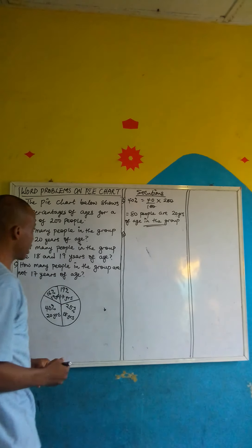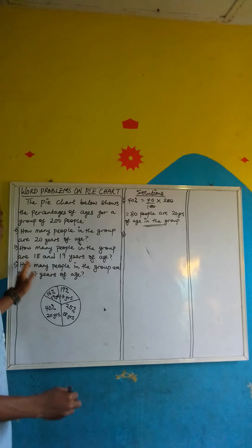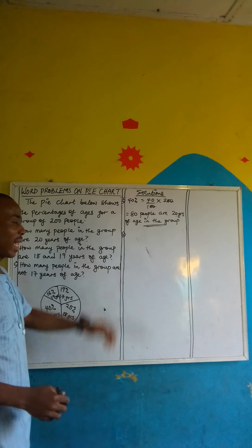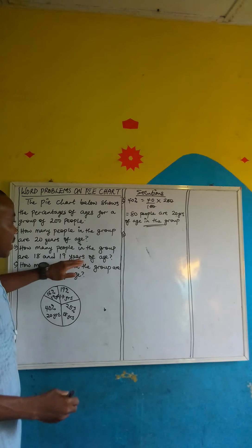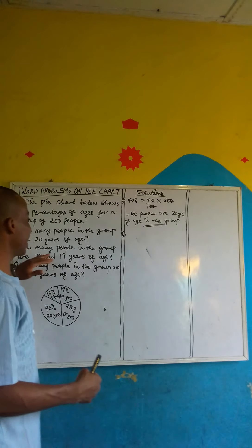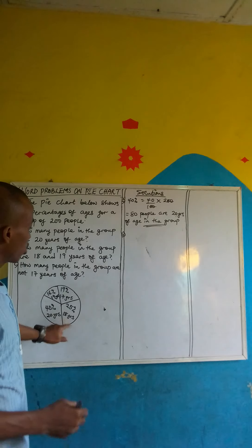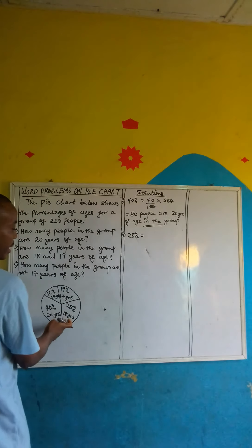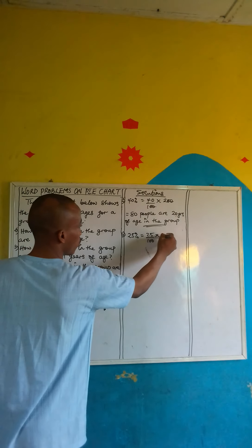For the second question: how many people in the group are 18 and 19 years of age? We get the tally for 18 and the tally for 19 and add them together. 18 years of age, according to the chart, is 25%. So 25 over 100 multiplied by the total 200 — the 2-0 cancels 2-0 — gives us 50 people who are 18 years of age.